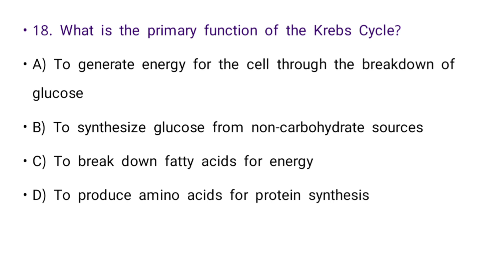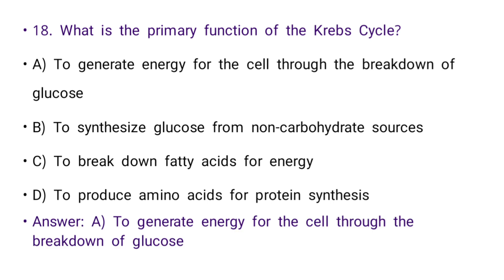Next: What is the primary function of the Krebs cycle? Options: to generate energy for the cell through breakdown of glucose, to synthesize glucose from non-carbohydrate sources, to break down fatty acids for energy, or to produce amino acids for protein synthesis. The right answer is A: to generate energy for the cell through breakdown of glucose.